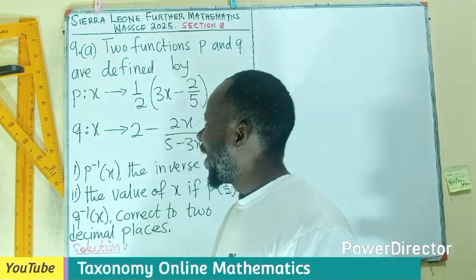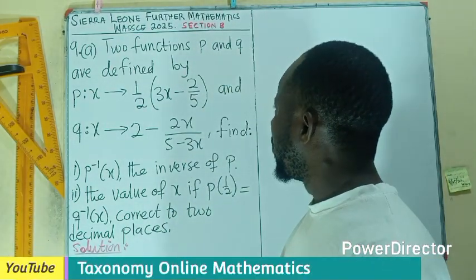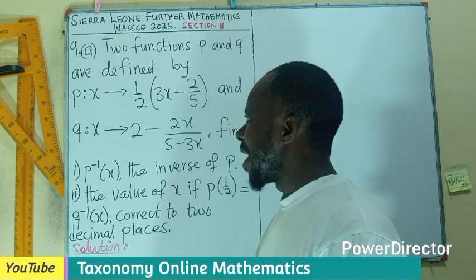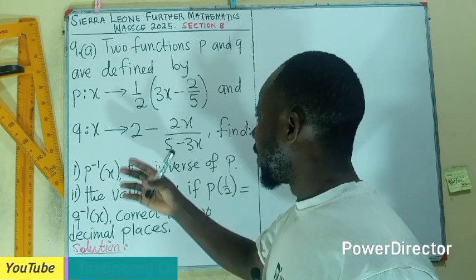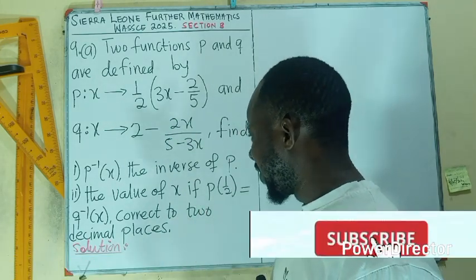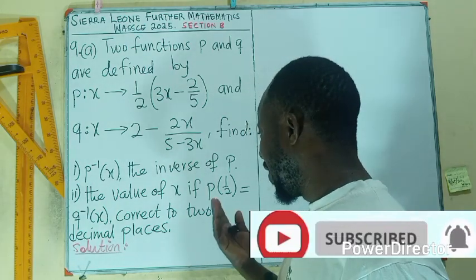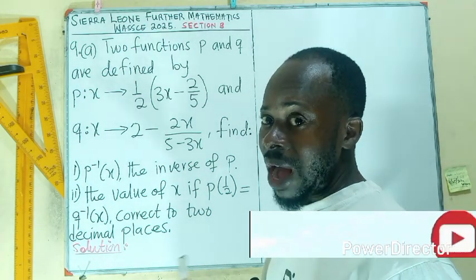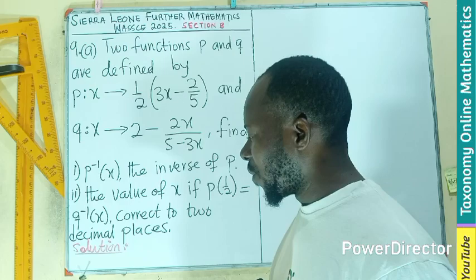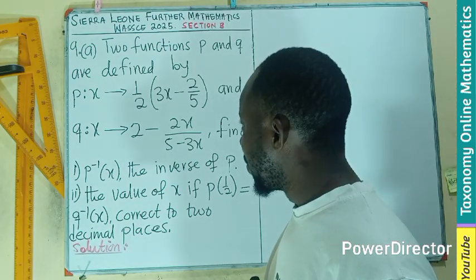Welcome to action 9A. Two functions P and Q are defined by this and this. We have to find the inverse of P as the first one. Find the value of X if P of half is the same as the inverse of fourth Q. So what do we do?